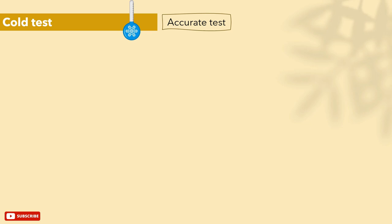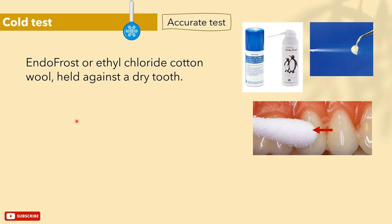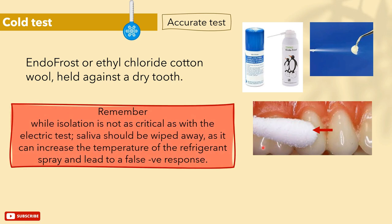For the cold test — keep in mind it is more accurate than the heat test. You can use Endo Frost or ethyl chloride sprayed on a cotton pellet, a Q-tip, or wool, and hold it against a dry tooth for five to ten seconds. The tooth must be dry because the presence of saliva at body temperature can increase the temperature of the refrigerated spray and lead to a false negative response. Hold the sprayed cotton on the buccal surface of the tooth in the middle or cervical thirds.